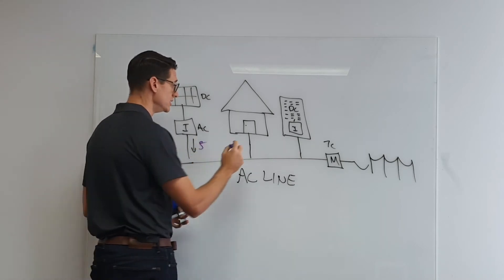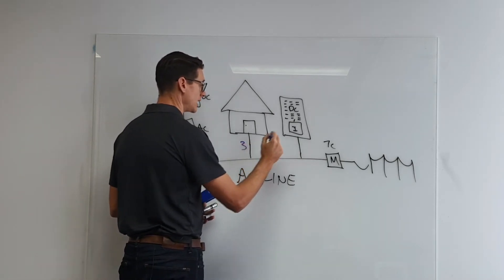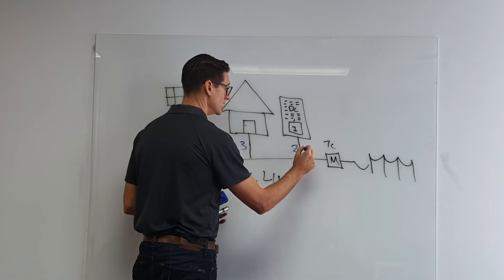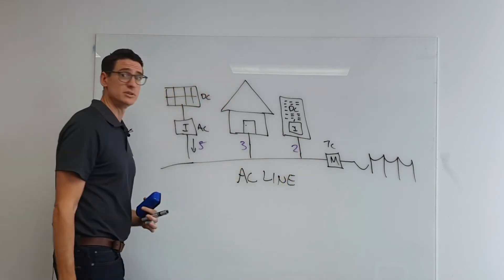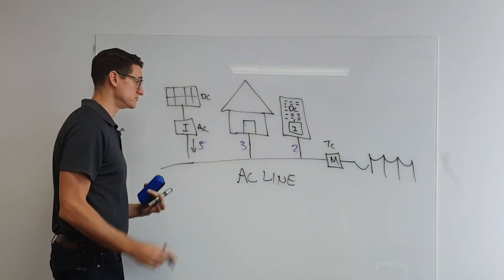So you might have a situation perhaps where your inverter is creating five kilowatts of power, your home is using three, and there's two that's heading into the battery itself. So that's essentially how it works.